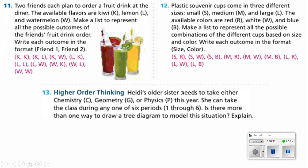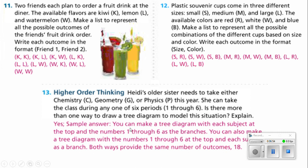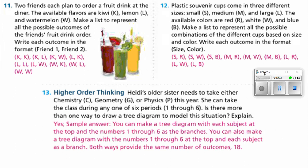Number 13 says Heidi's older sister needs to take either chemistry, geometry, or physics this year. She can take the class during any one of the six periods, one through six. Is there more than one way to draw a tree to model the situation? I think so. You can make a tree diagram with each subject at the top and the numbers one through six as the branches, which would represent the period, or you can make the tree diagram with the numbers one through six at the top and each subject as a branch. Both ways provide the same number of outcomes, which would be 18. Six times three is 18.